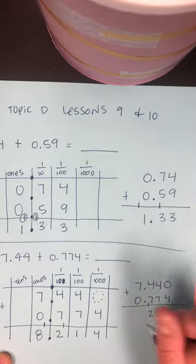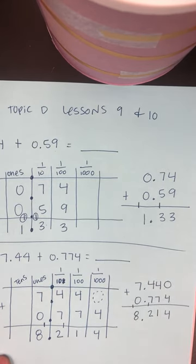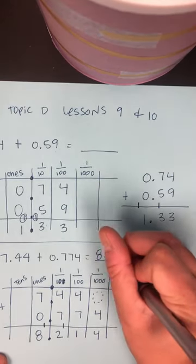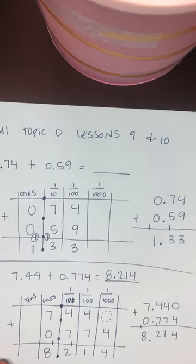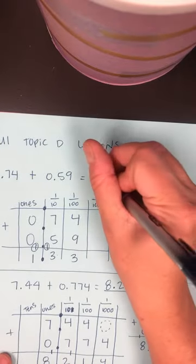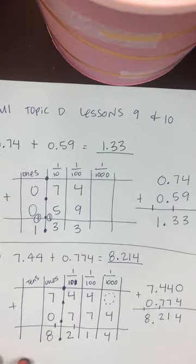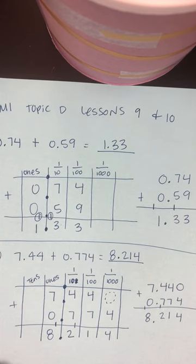So, your answer should be 8.214. And I'm going to write my answer in the blank. So, that way you can see where my answer goes and that it's correct. And I forgot to do that up top. So, I need to do that again. Okay? Pretty easy. Just like adding whole numbers. Let's do a subtraction problem.